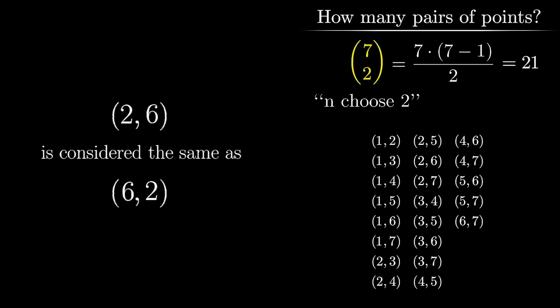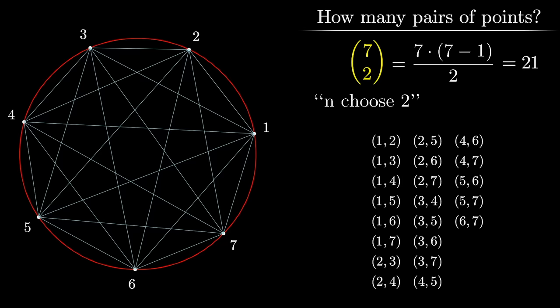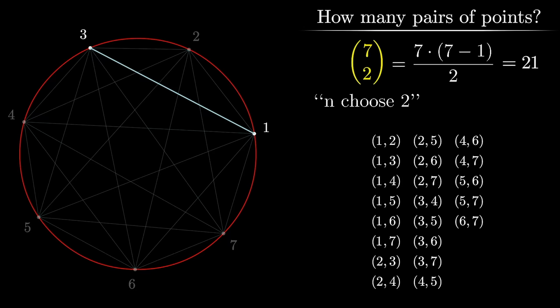So for example 7 choose 2 would look like 7 times 6 divided by 2, which is 7 times 3, or 21. And if you count up the number of distinct pairs of seven items, there are indeed 21 of them.